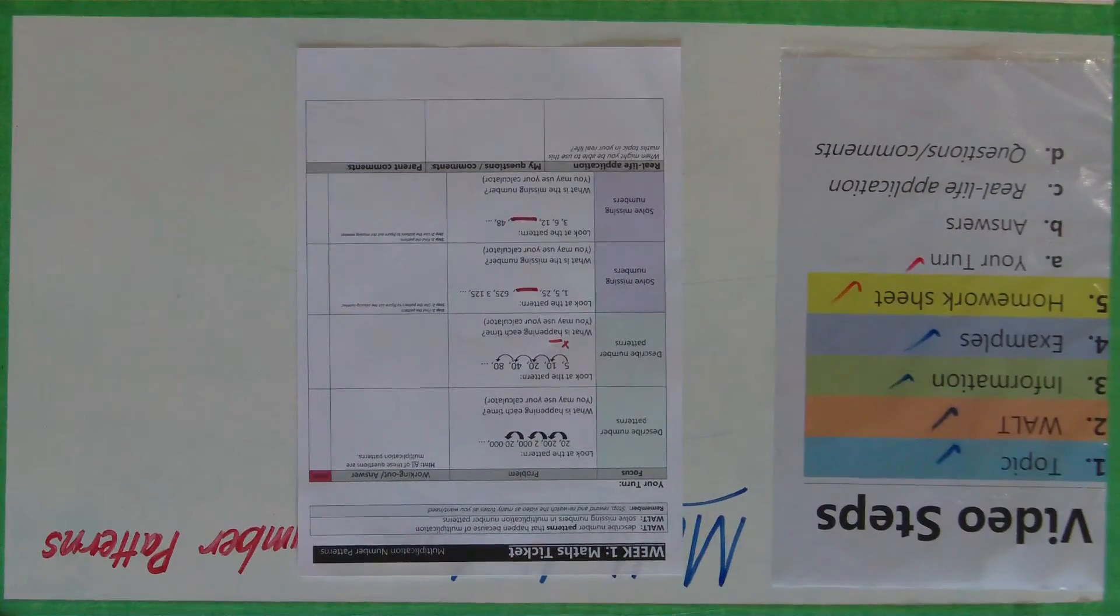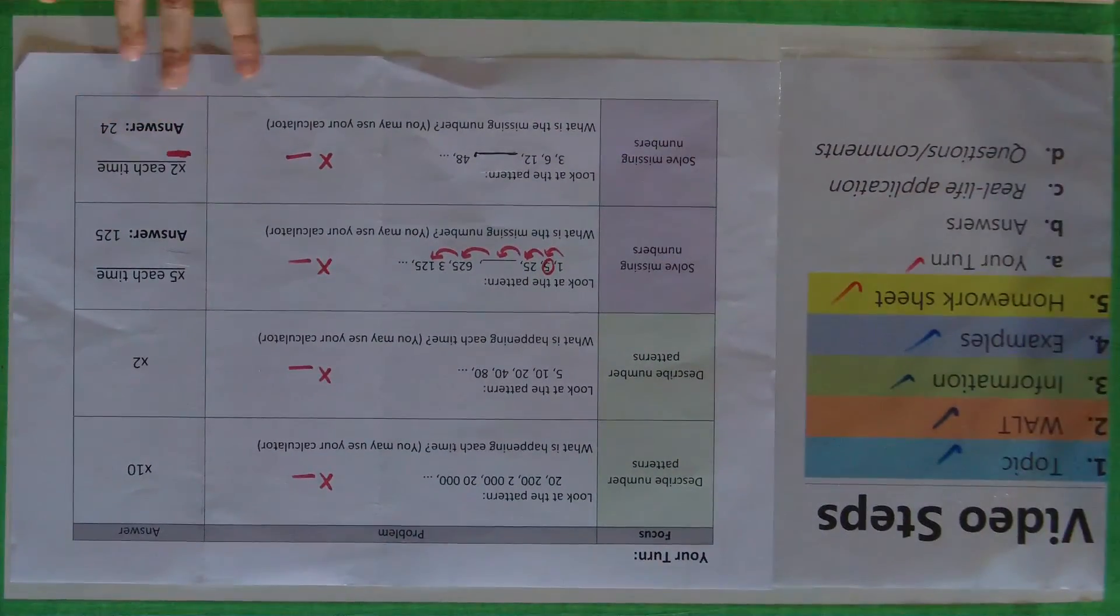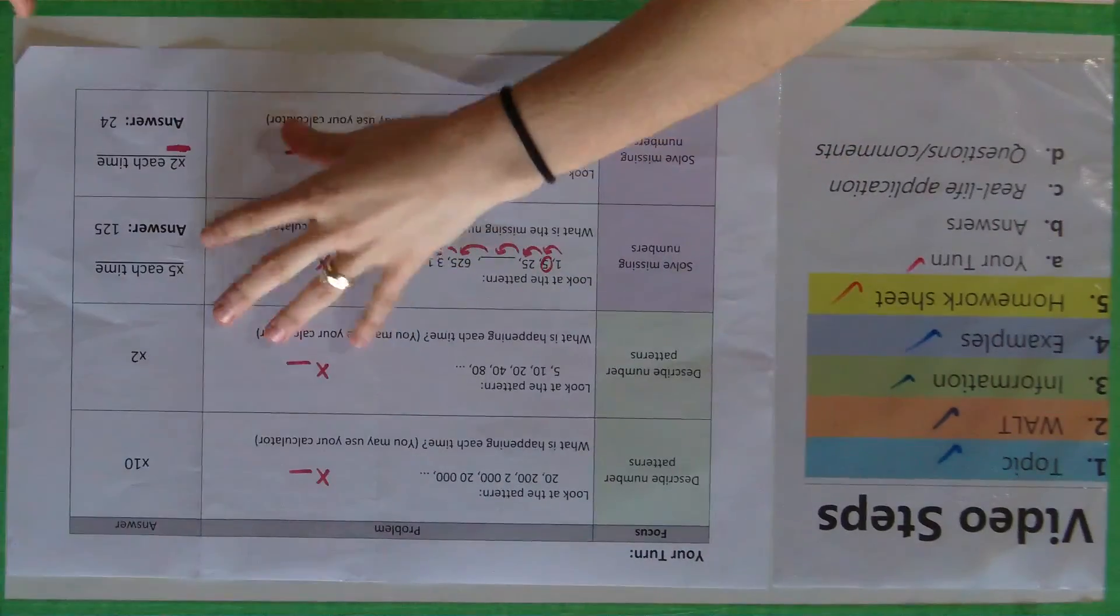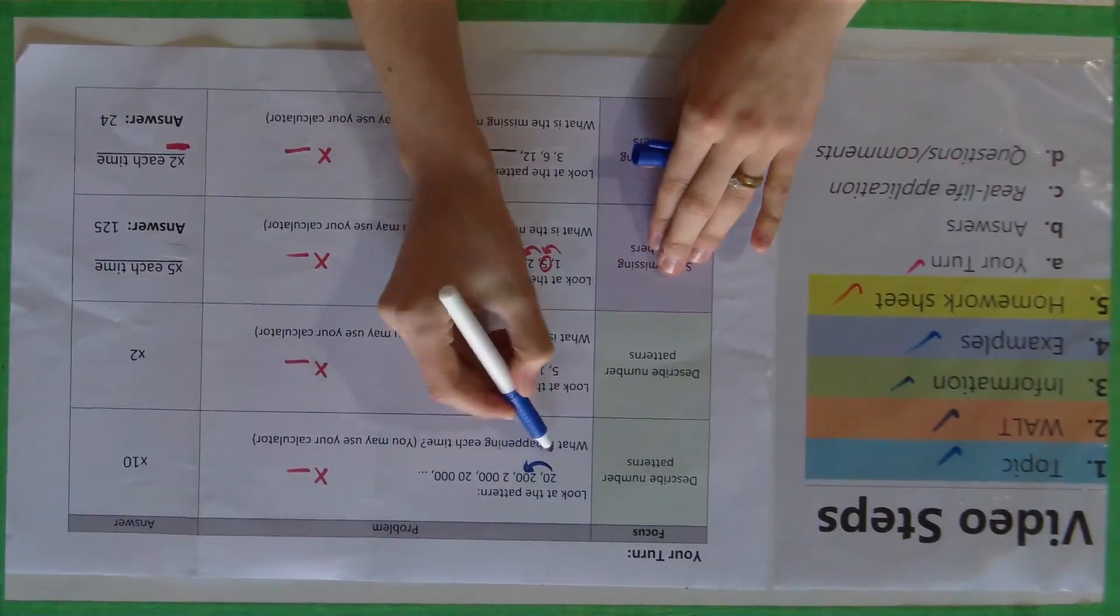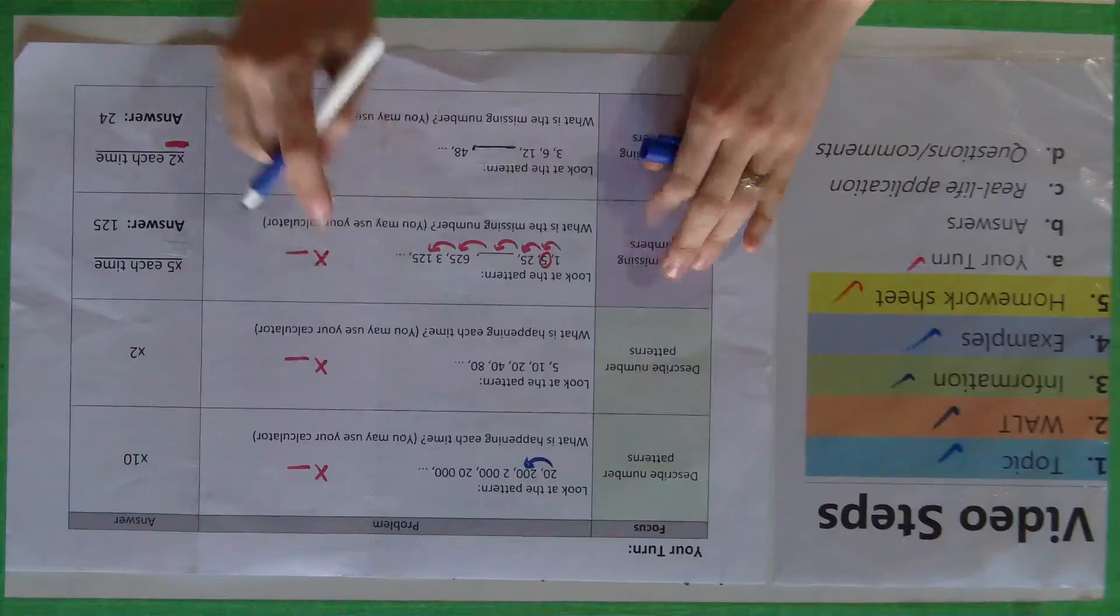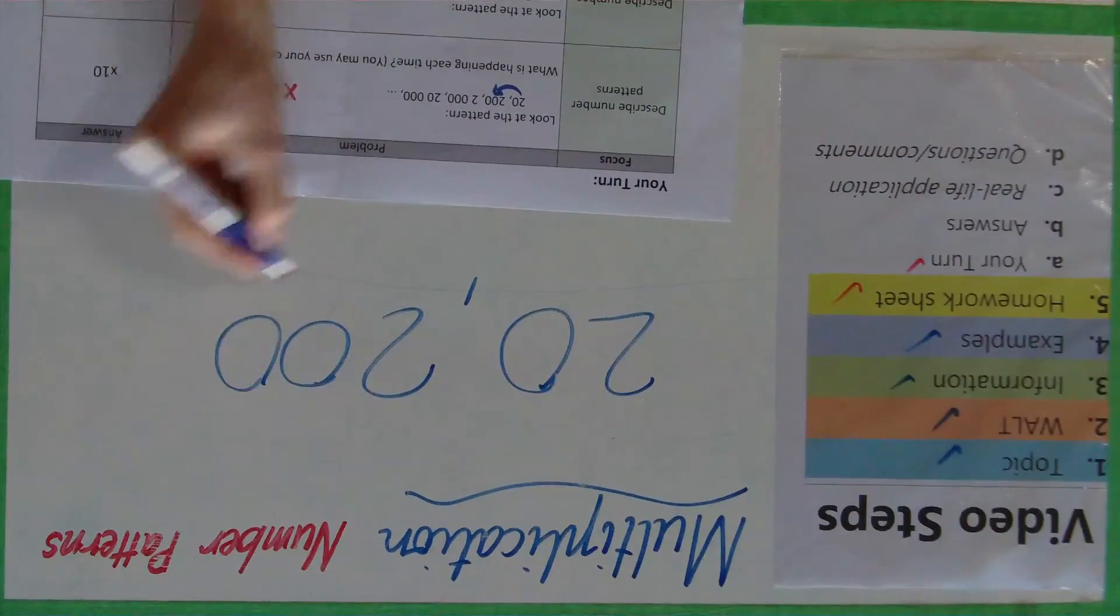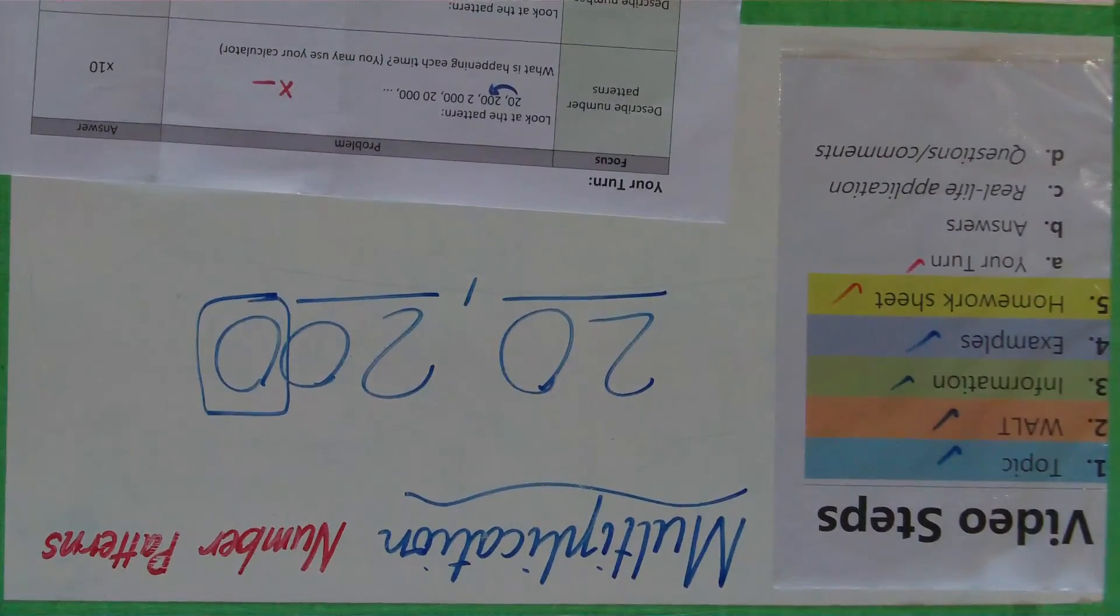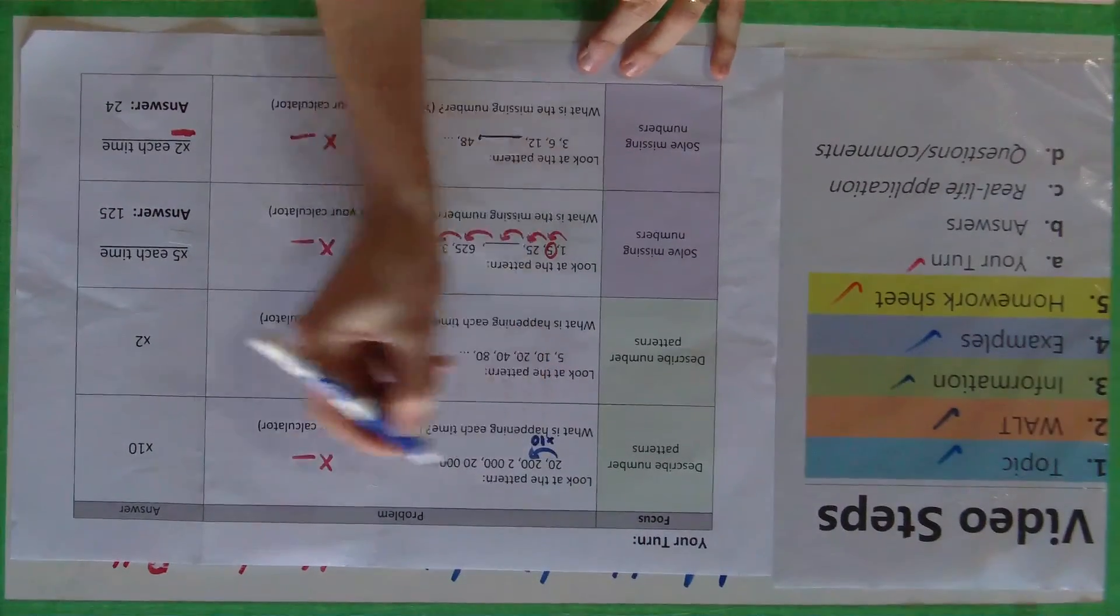Alright, so let's get my answer sheet. So for the first one, the pattern, it's actually going up by 10s, because I know that to get from 20 to 200, there is simply just an extra 0 at the end there, which means multiplying by 10. So that's a times by 10 pattern.